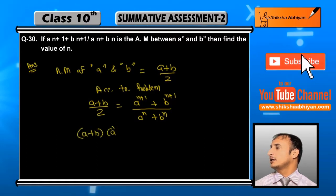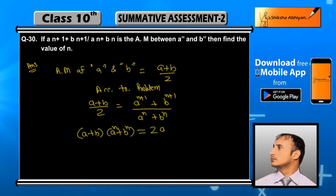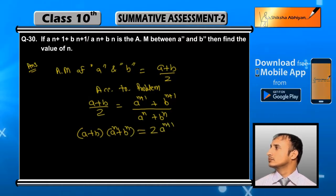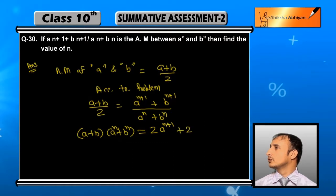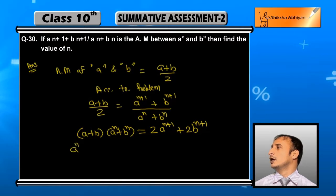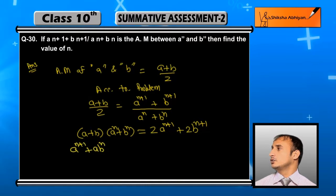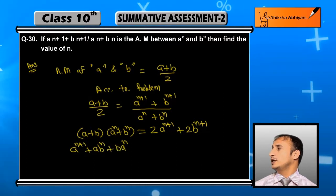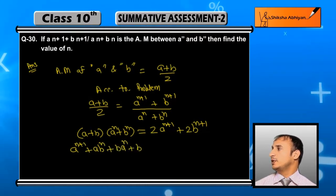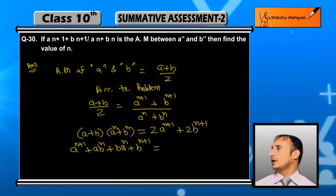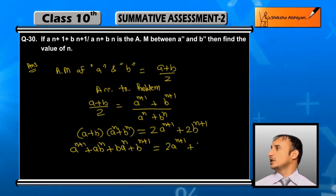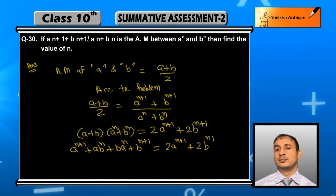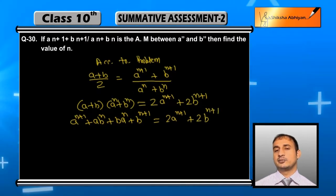Now cross multiply. This will become: 2a^(n+1) + 2b^(n+1) = (a + b)(a^n + b^n). Expanding the right side: a·a^n + a·b^n + b·a^n + b·b^n, which gives a^(n+1) + ab^n + ba^n + b^(n+1).